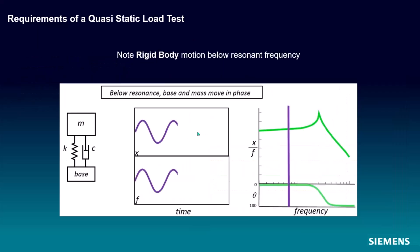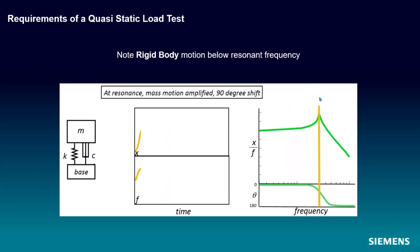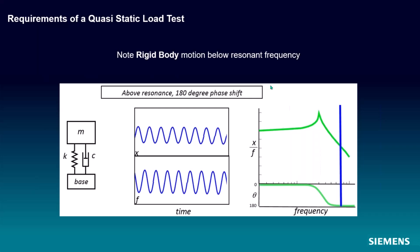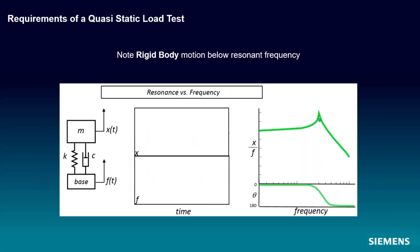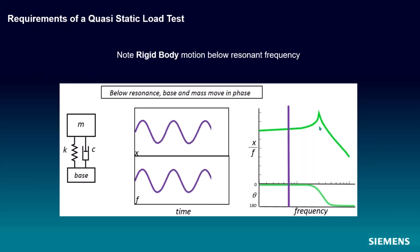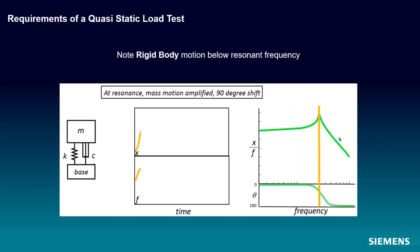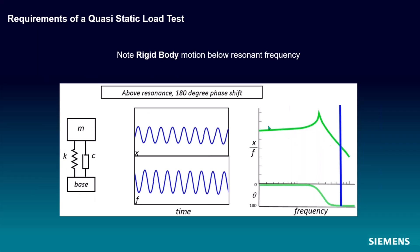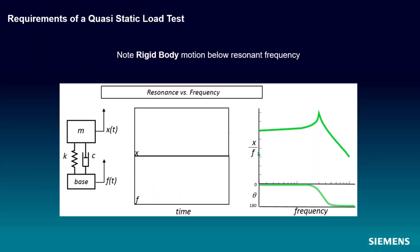Now, why do we want to have that frequency below our first resonant frequency? Well, you might have seen this little GIF or GIF or whatever we're calling them these days before. And you can see below resonance, we have our base excitation and our response. They're approximately the same amplitude and they're in phase. Once we get to resonance, we start to see this amplification and past resonance we see a decrease in amplitude. So we want to be in this area down here so that we're getting this static loading and we're not getting this dynamic amplification that happens here.